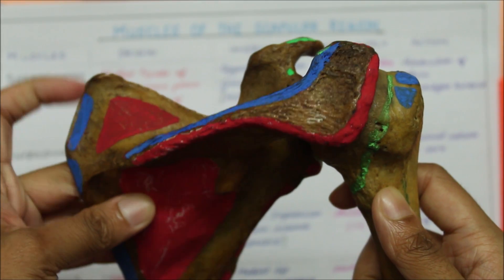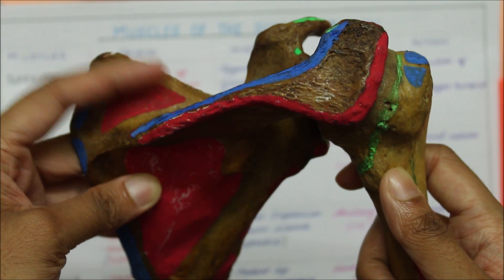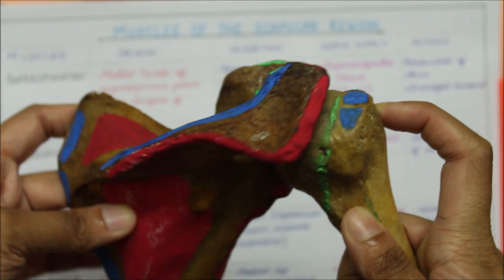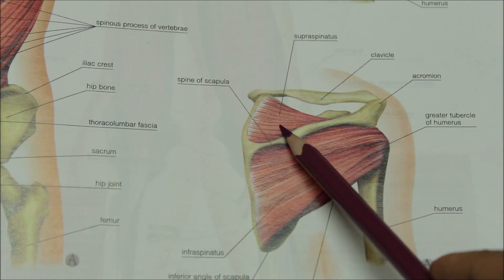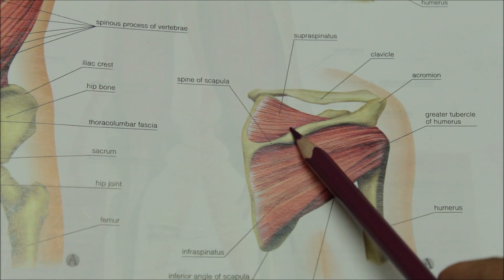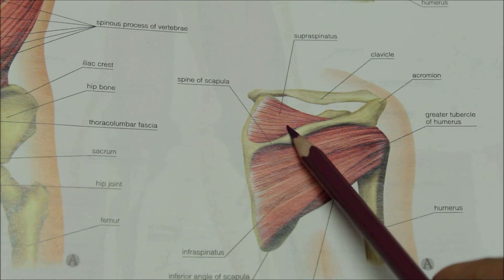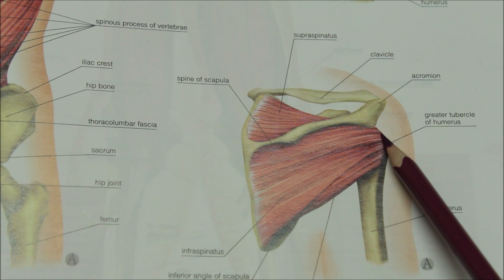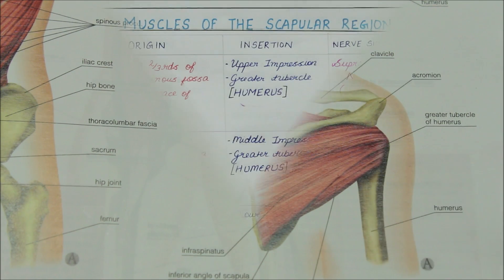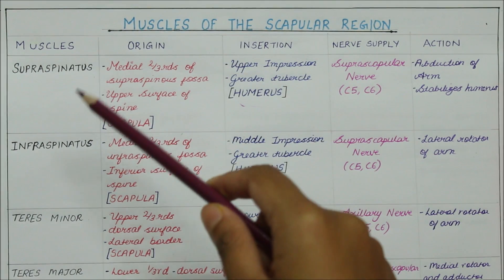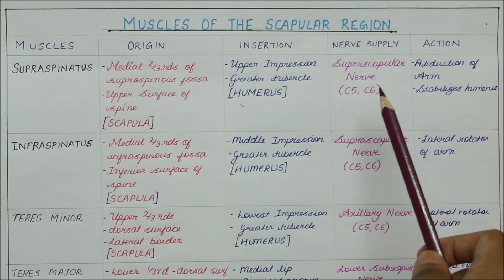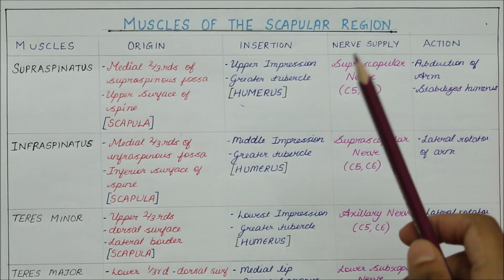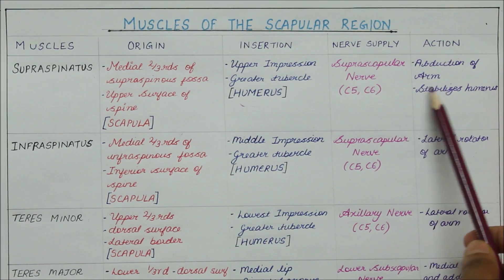As a whole, the supraspinatus originates from the supraspinous fossa and inserts into the upper impression of the greater tubercle of the humerus. It originates from the medial two-thirds of the supraspinous fossa and the upper surface of the spine of the scapula, and inserts into the upper impression of the greater tubercle of the humerus. Moving on to nerve supply, the supraspinatus is supplied by the suprascapular nerve. Its action is abduction of the arm and stabilization of the humerus.